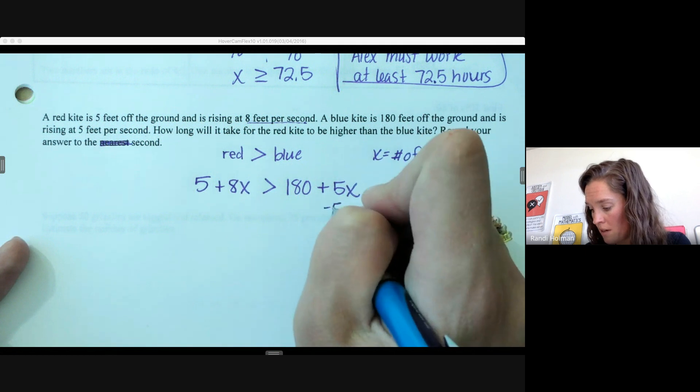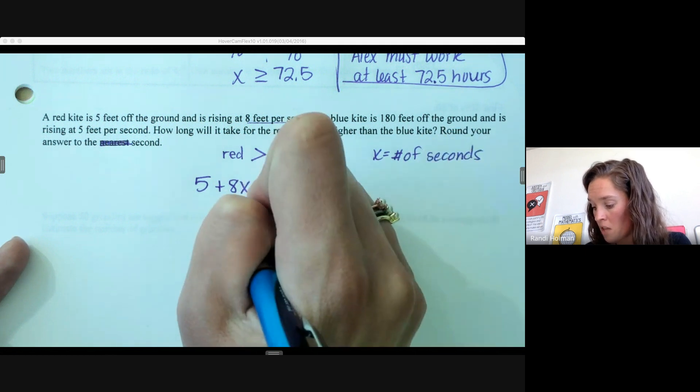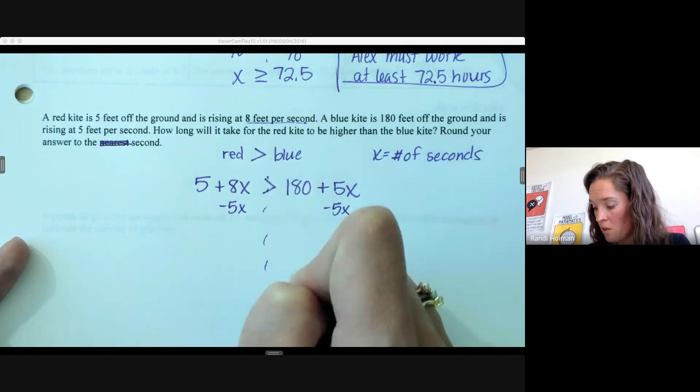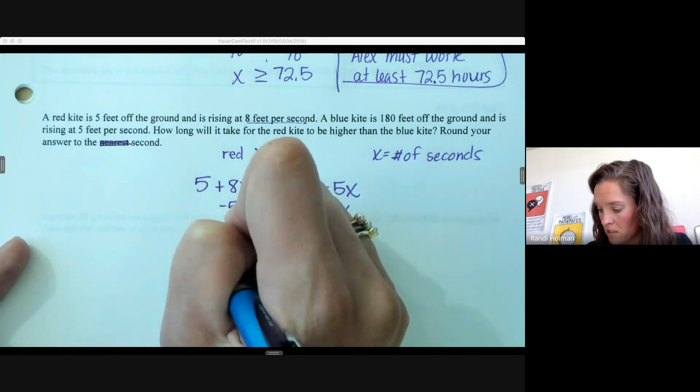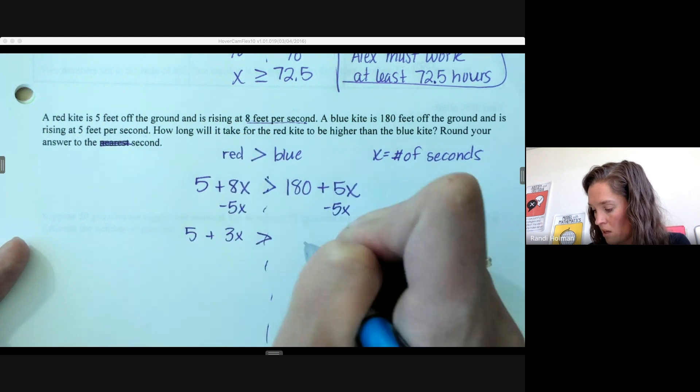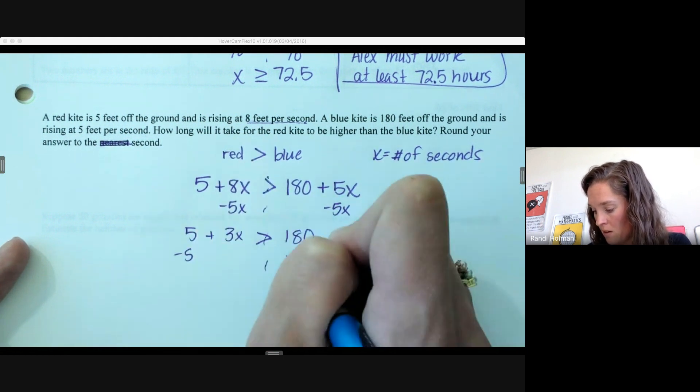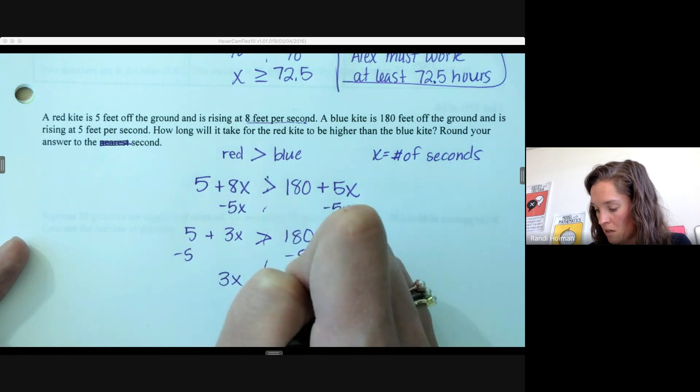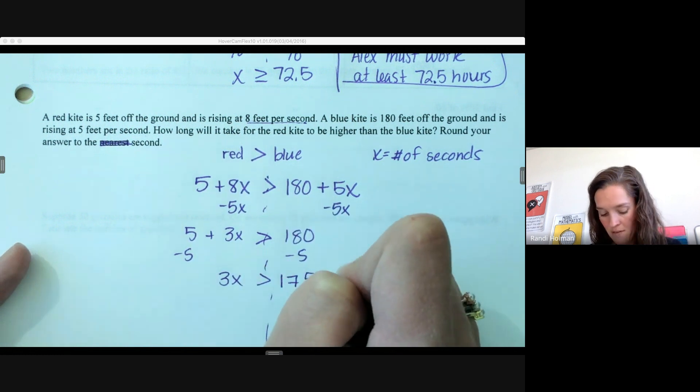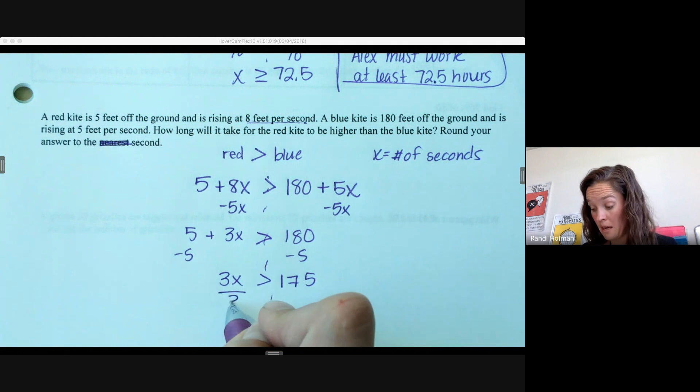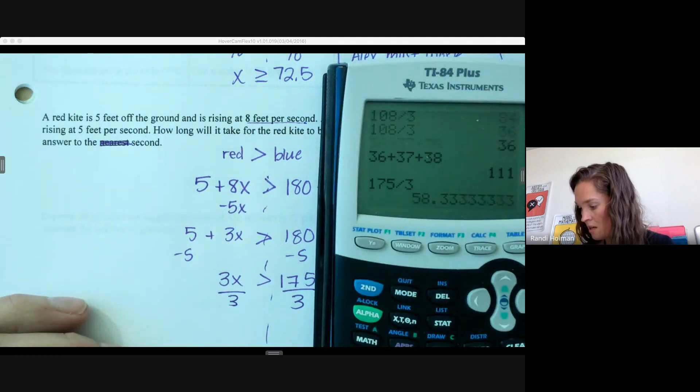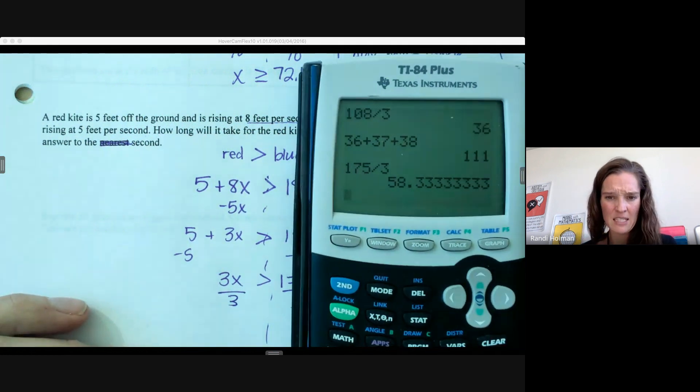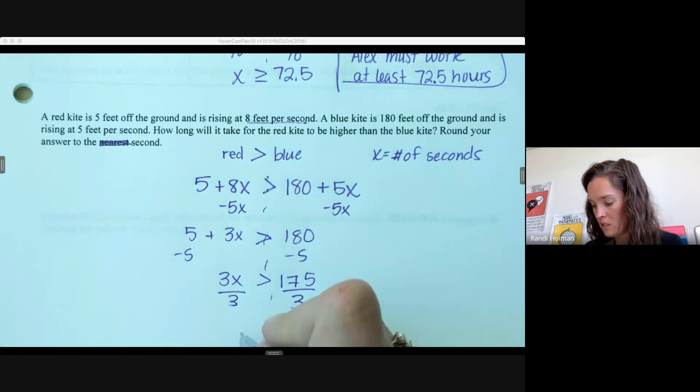Let's get our variable on the same side. Remember, solving inequalities is just like solving equations—make sure you're doing things to both sides of your inequality. Subtract 5x from both sides: 3x is greater than 180. Subtract 5: 3x is greater than 175. Then we're going to divide by 3. 175 divided by 3—we get 58 and a third, so x has to be greater than 58.3.